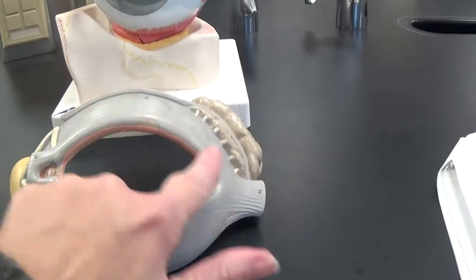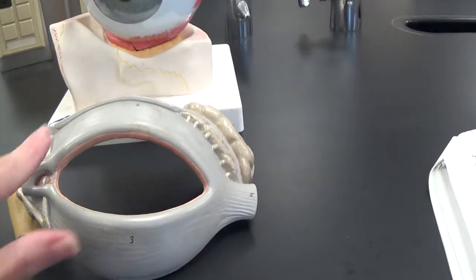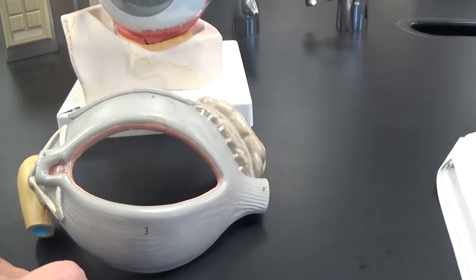The muscle around the eye is the orbicularis oculi, which we also covered in our chapter on muscles.